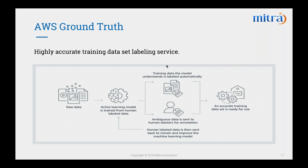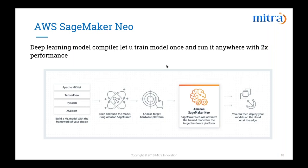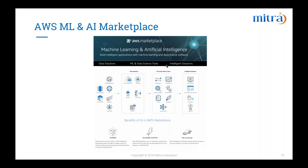Next is AWS SageMaker Neo — a deep learning model compiler. SageMaker Neo optimizes trained models for target hardware platforms. It was open-sourced at the AWS re:Invent event, so you can use your own algorithms and ML frameworks for optimization. The best thing about it is it's free to incorporate in any app or device. Finally, there is the AWS AI and Machine Learning marketplace, recently released at re:Invent. As Meetra employees, we have already deployed three models in the initial phase, which we will talk about in the next webinar.